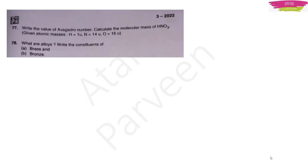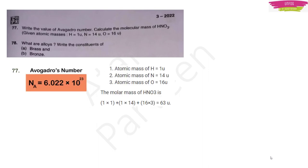Question 77: Write the value of Avogadro's number and calculate the molecular mass of HNO₃. Avogadro's number = 6.022 × 10²³. For HNO₃: atomic masses are H=1, N=14, O=16. Molecular mass = (1×1) + (1×14) + (16×3) = 1 + 14 + 48 = 63 u.